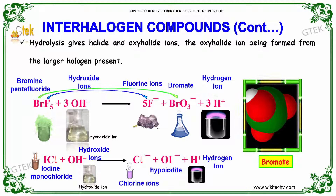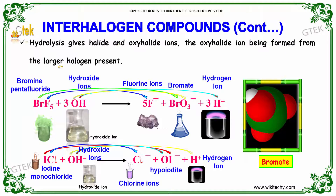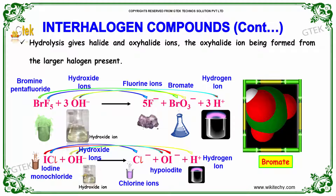Hydrolysis gives halide and oxyhalide ions, the oxyhalide ion being formed from the larger halogen present. Bromine pentafluoride with hydroxide ions gives fluoride ions, bromate, and hydrogen ions. Iodine monochloride mixed with hydroxide ions gives chloride ion, hypoiodite, and hydrogen ion. Here is a typical 3D model of bromine.